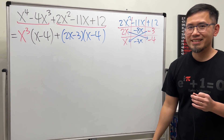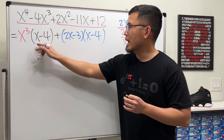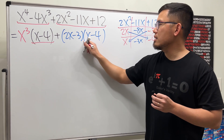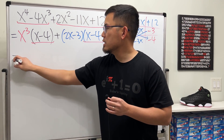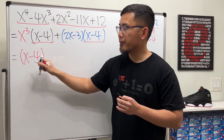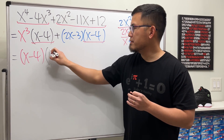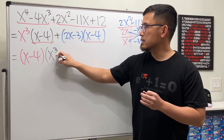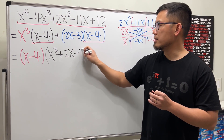This is excellent because we see that we have x minus 4 in common, so we can factor that out. This will give us x minus 4 in the front, and then we will have x to the third power left, plus this term which is 2x minus 3.